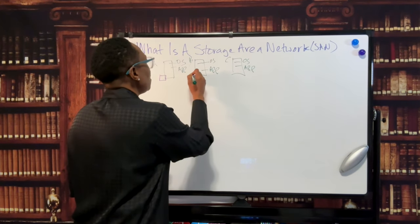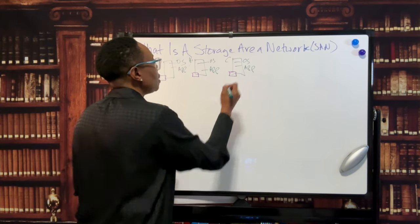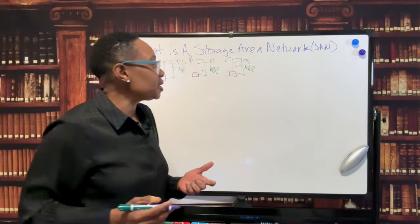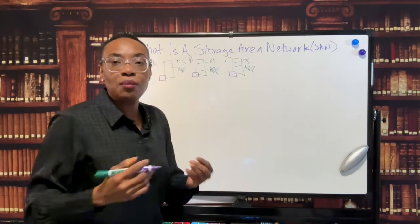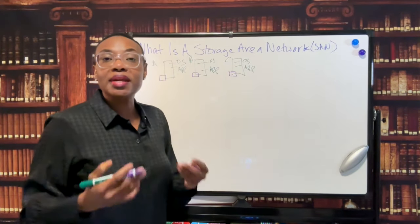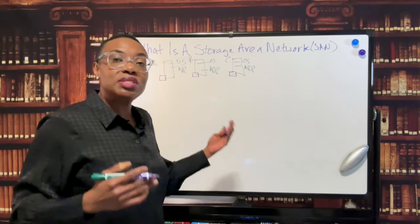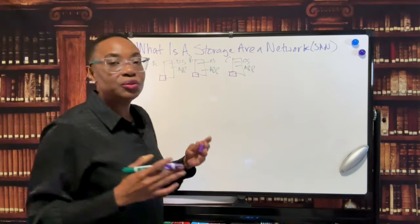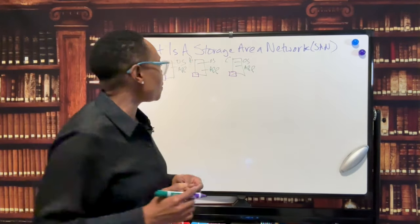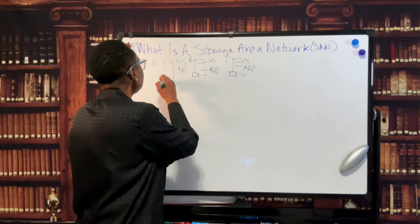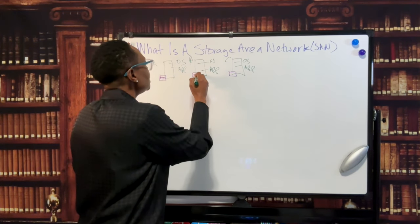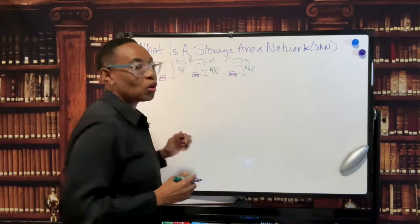And then these servers also have HBA adapter cards. Think about an HBA adapter card as a network interface card. These servers also need network interface cards to connect to the local area network through Ethernet. Same thing with SAN - they need a card to connect to the storage area network.